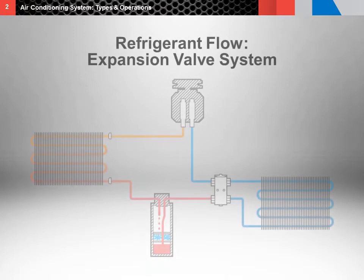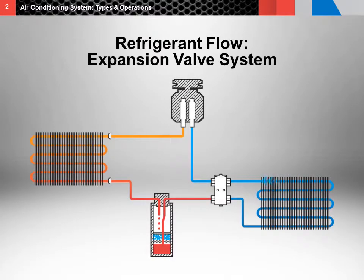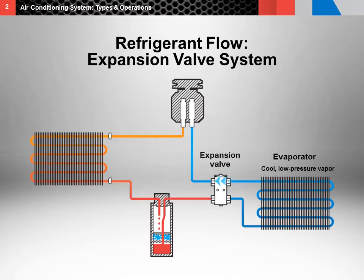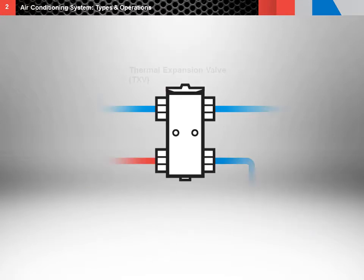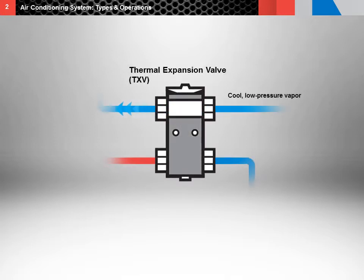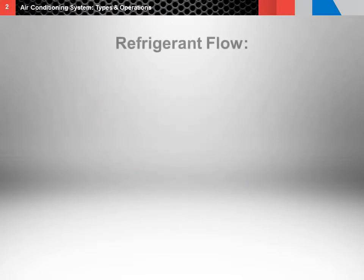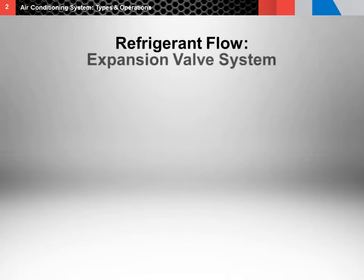For systems with block type expansion valves, the refrigerant exits from the outlet port of the evaporator as a cool, low pressure vapor refrigerant. It then re-enters the expansion valve as a cool, low pressure vapor, passes unrestricted through the outlet of the expansion valve, and is then drawn back to the compressor through the hose as a cool, low pressure vapor. That's how refrigerant flows through expansion valve air conditioning systems.